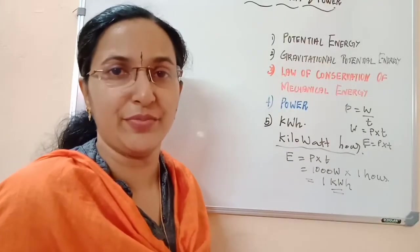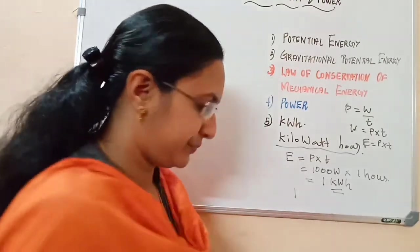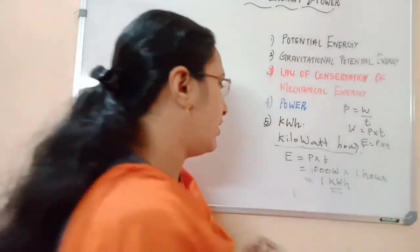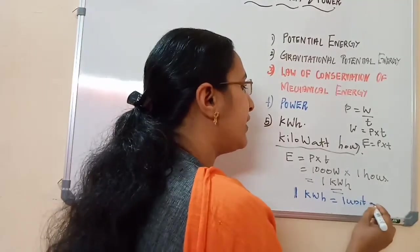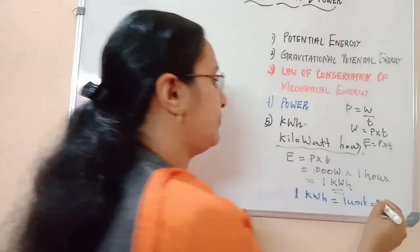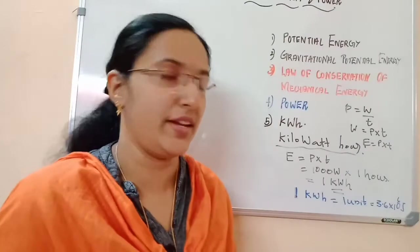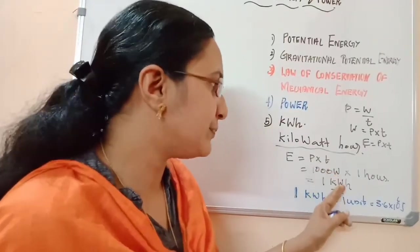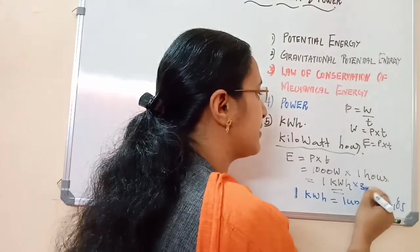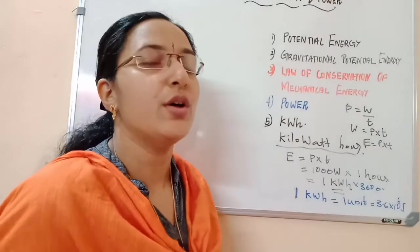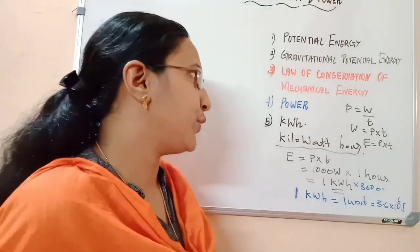1 kilowatt hour equals 1 unit of electrical energy — that is what you are familiar with as 1 unit on your electricity bill. 1 kilowatt hour equals 3.6 × 10⁶ joules. As an assignment, you should find out how this value is obtained: 1000 watt into 1 hour, which is 3600 seconds, gives 1000 × 3600 = 3.6 × 10⁶ joules. So 1 kilowatt hour equals 1 unit of electrical energy, which equals 3.6 × 10⁶ joules.